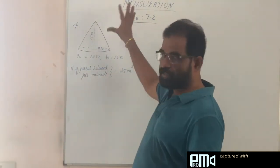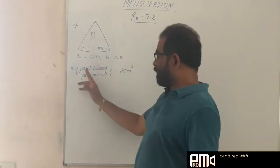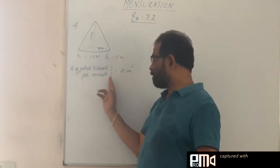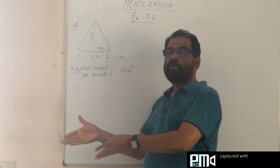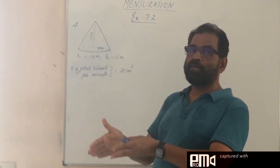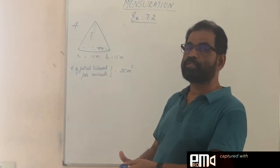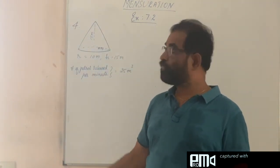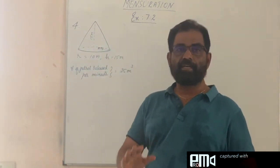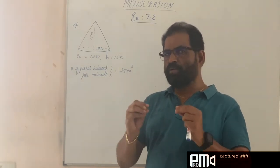So volume of petrol released per minute is equal to 25 meter cube. If it releases petrol like this, 25 meter cube per minute, in how many minutes this full container will be emptied? The full container will be emptied, we can do it very simply.